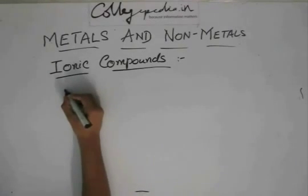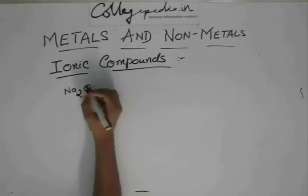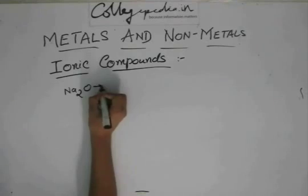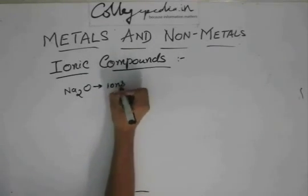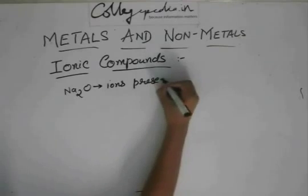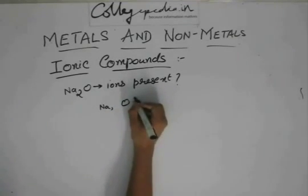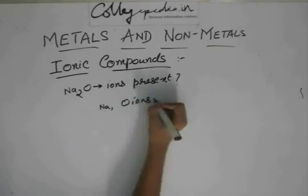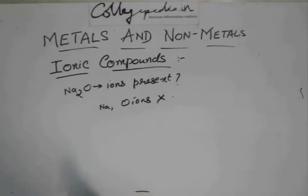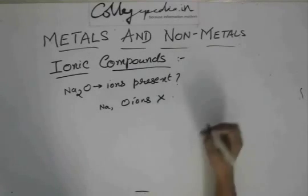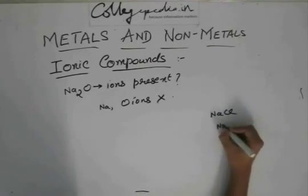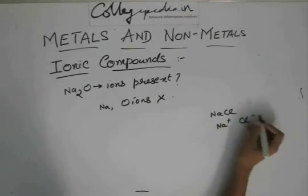Now, if someone asks you that in Na₂O, what are the ions present? Would you write Na ions and O ions? No. You have to say exactly what the ion is. Like in NaCl, you have Na⁺ and Cl⁻.